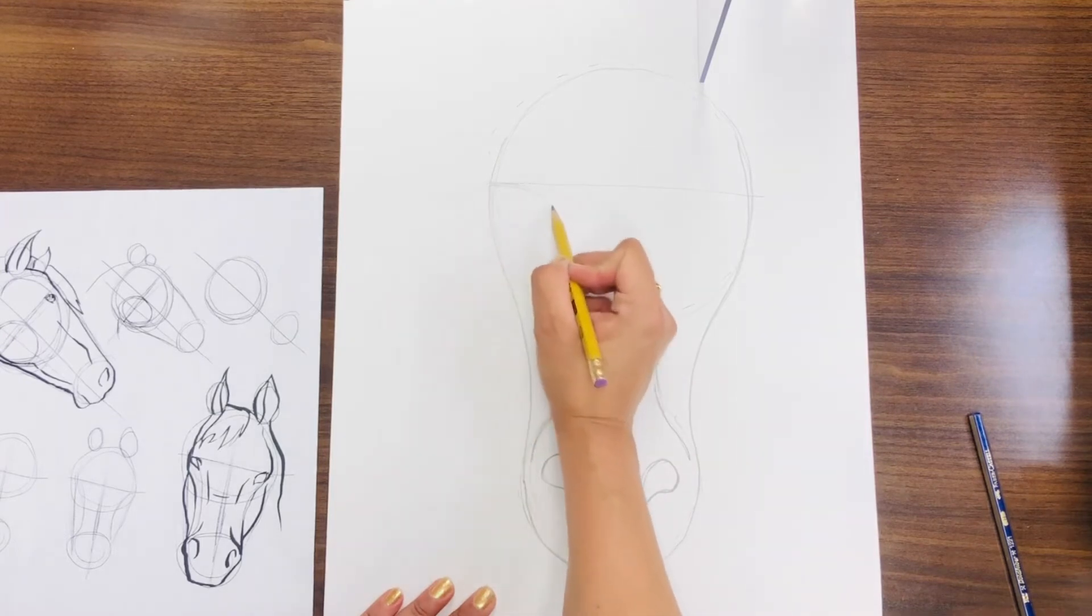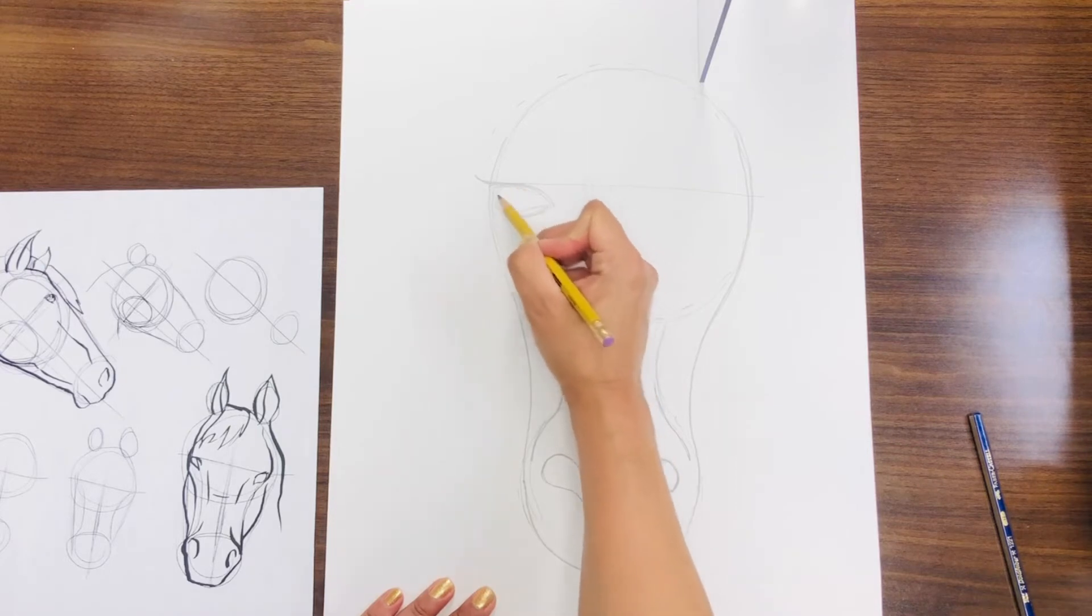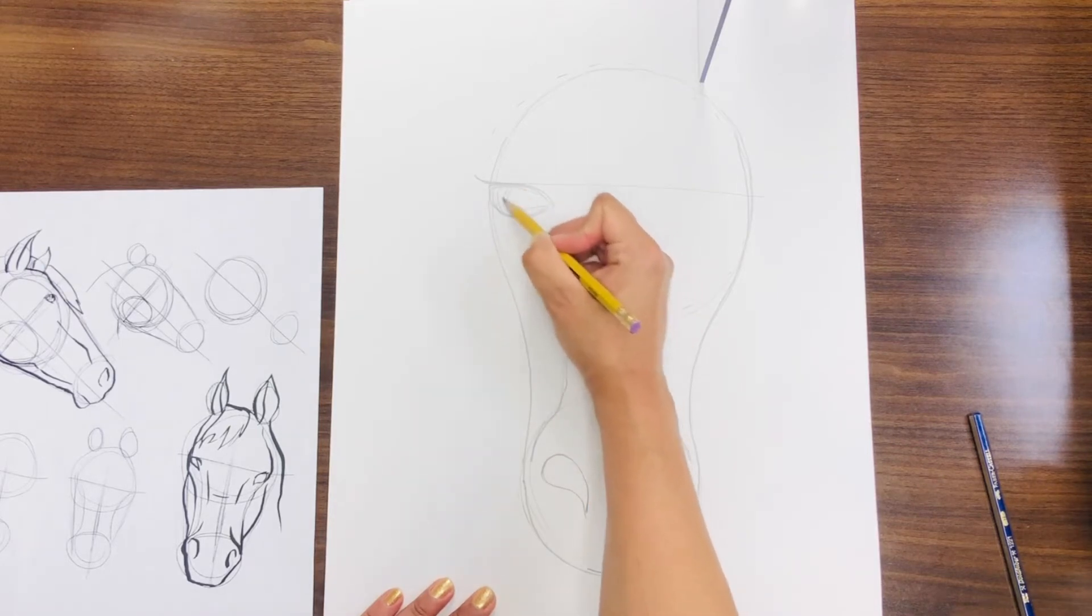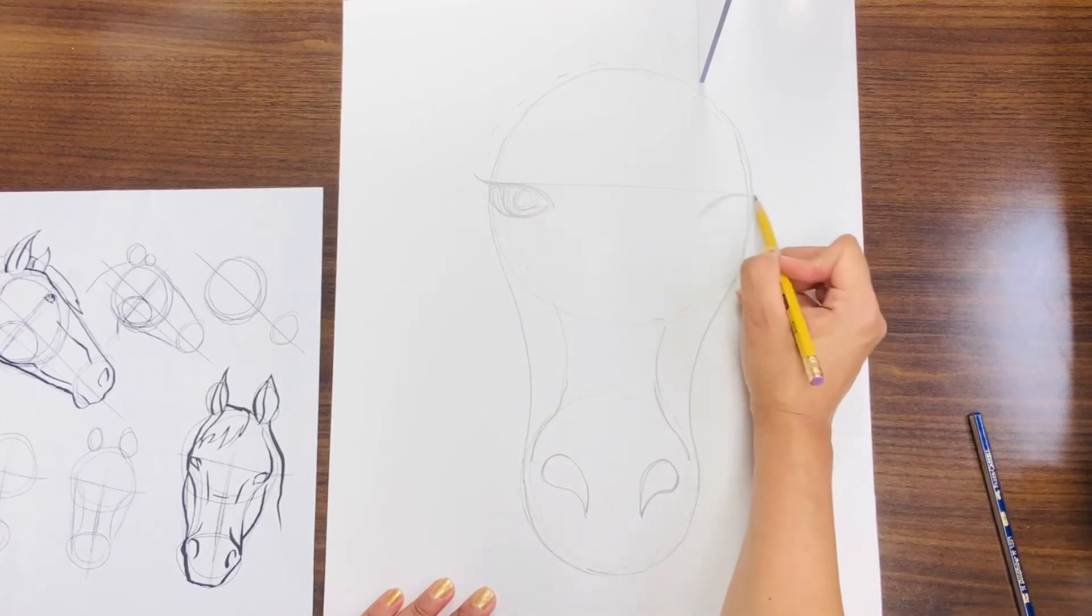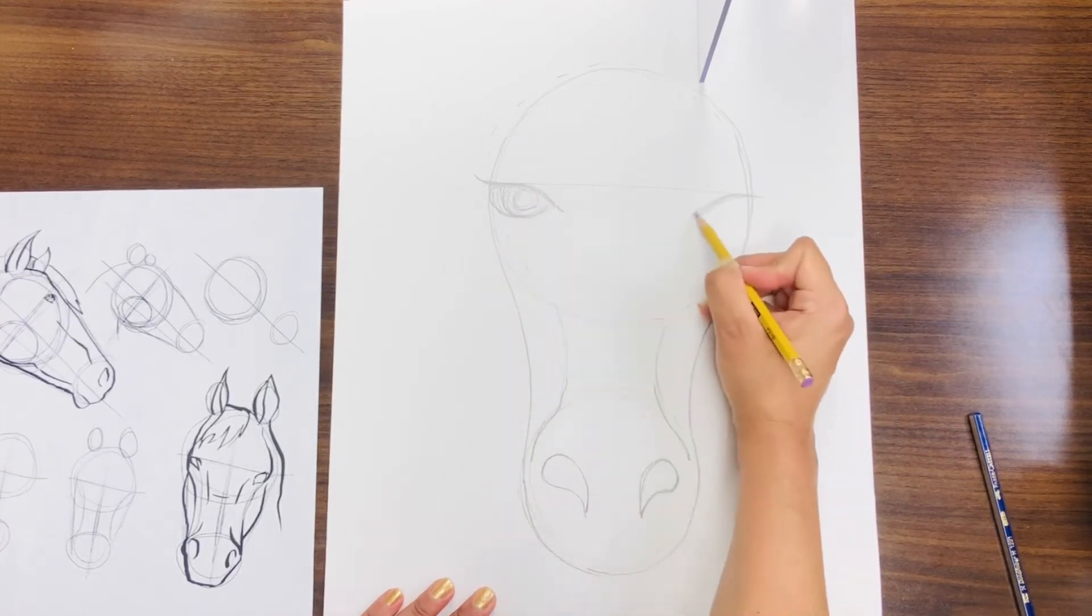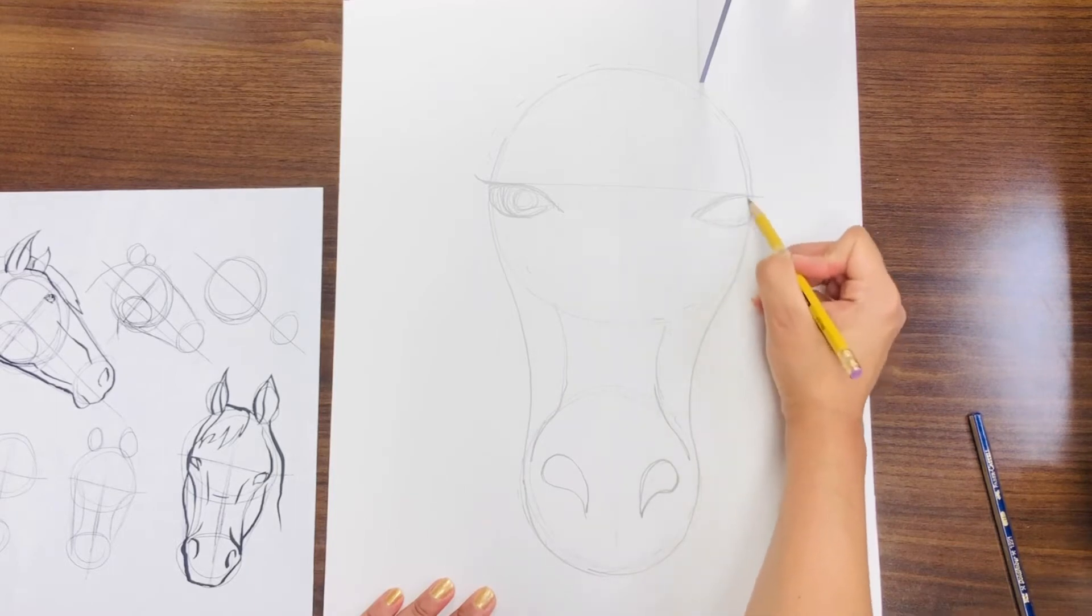Then the eyes, make them symmetrical, same size and same place on both sides of the head. Make large eyes. Later on, in part two, I will show you how to color them in very nicely with color pencils.